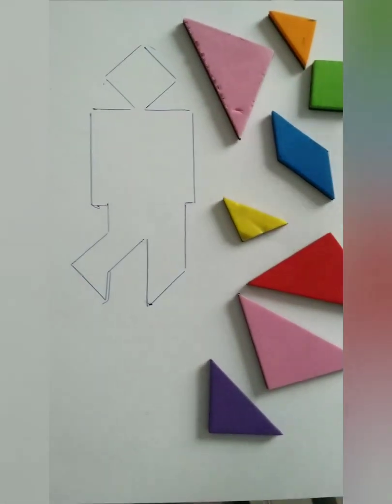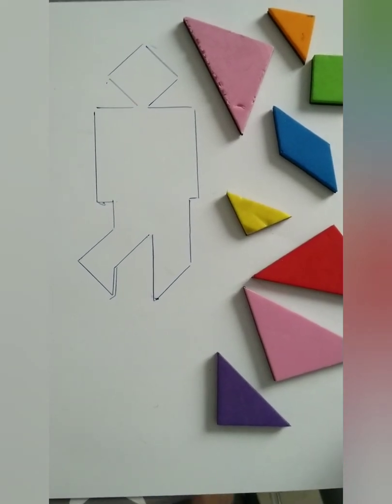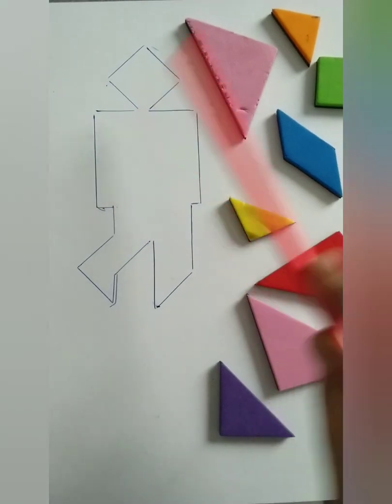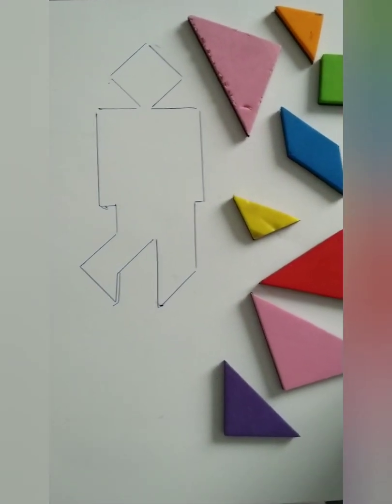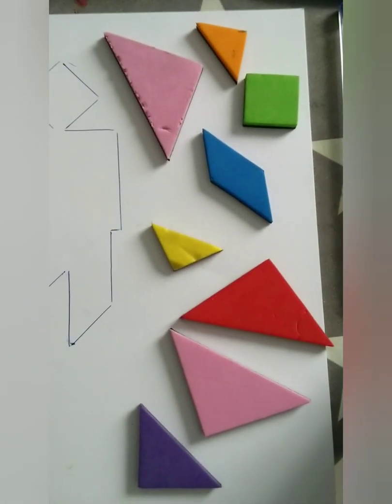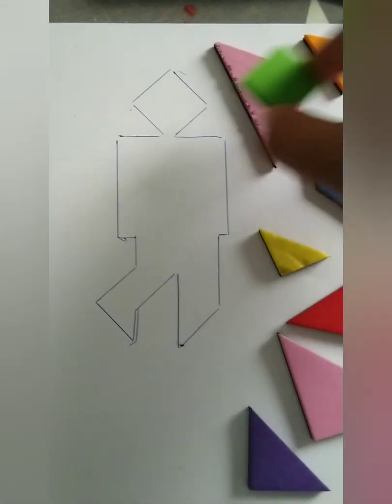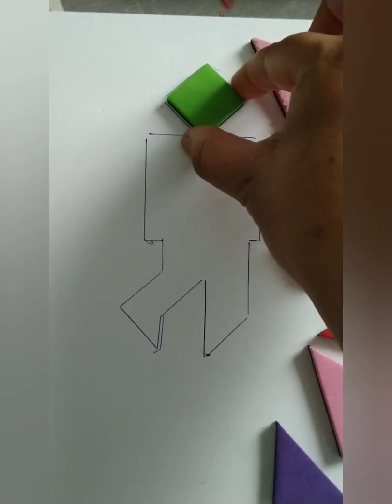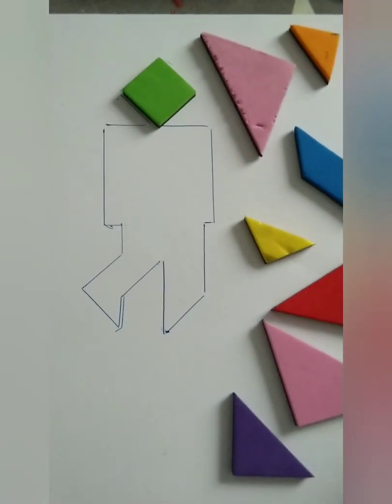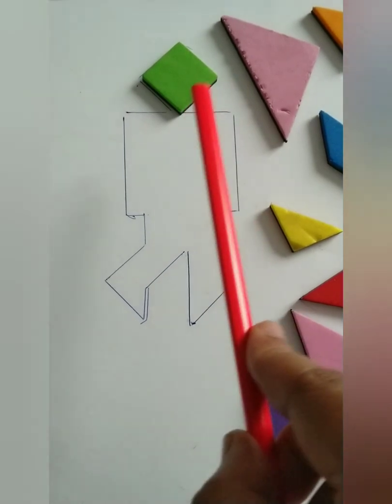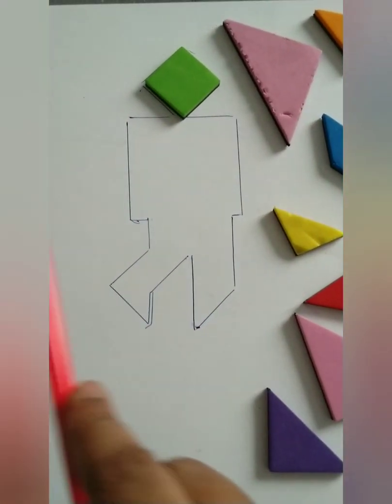So now once again let's start. This is looking like a square shape, so let's put that green square. That's correct. Now again similarly we can see a big square shape, same way as we had done in our last figure.